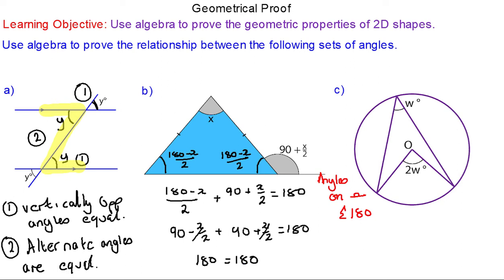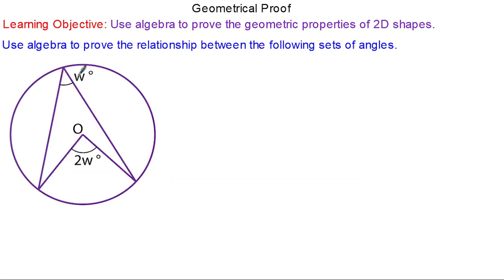For question c we're going to prove the angle at the center is double the angle at the circumference. I'm going to split the arrow in two. I'll denote this triangle as a and a with the angle at the center b. The two a's must be equal because the radii are equal.